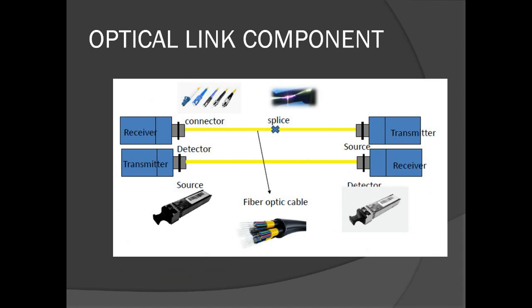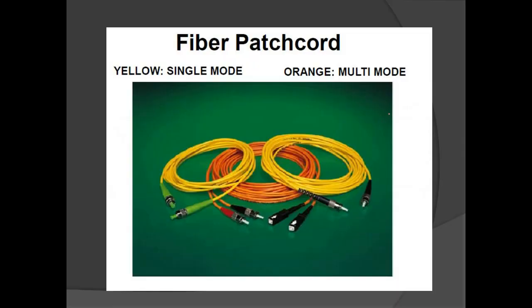This is the optical link component. We have the transmitter and the receiver, and there is also a fiber converter that converts fiber connectivity to UTP or Ethernet connectivity, converting the fiber link into Ethernet. For fiber patch cords, yellow is usually a single-mode fiber patch cord, and orange is a multi-mode fiber patch cord.